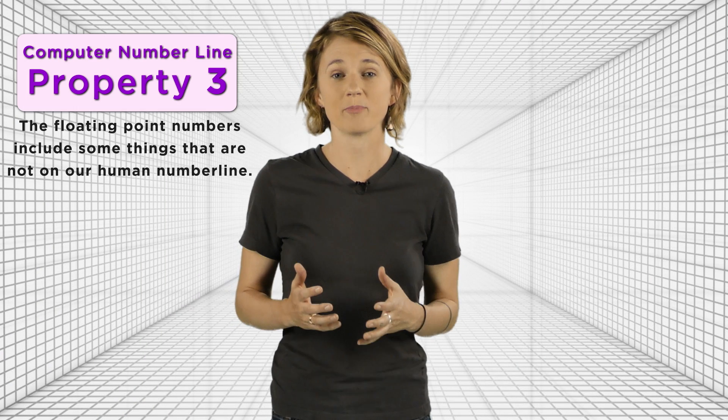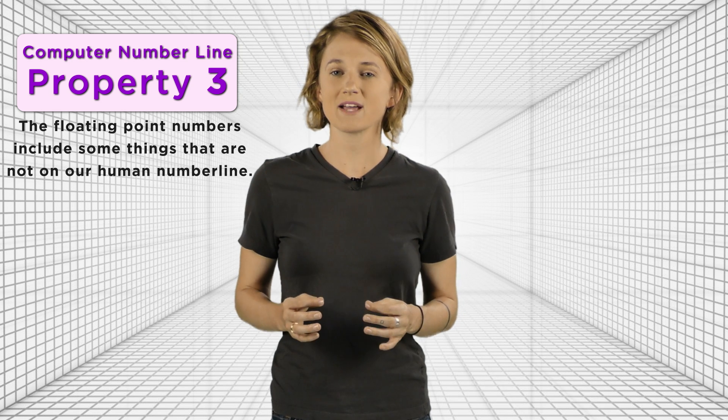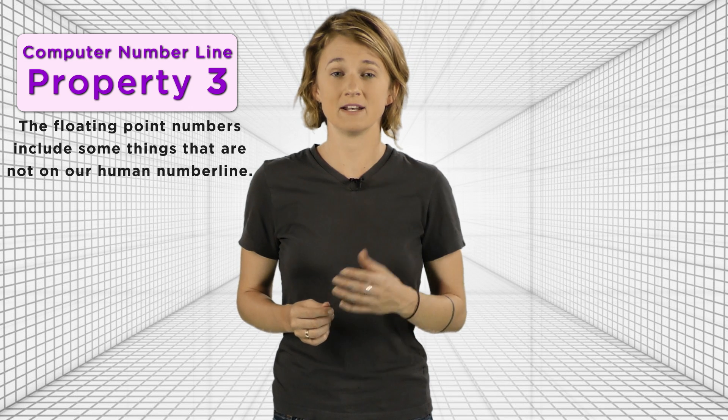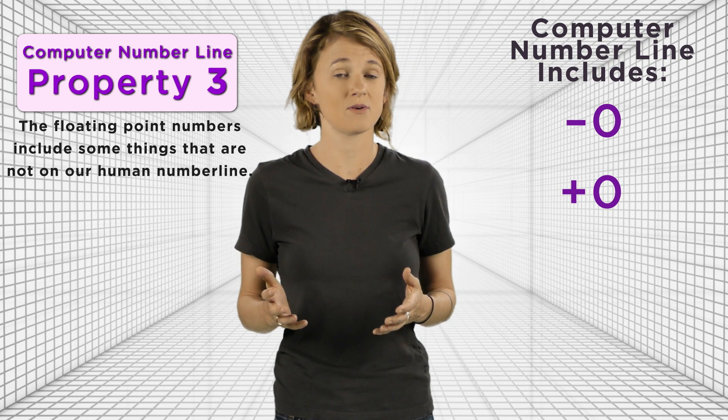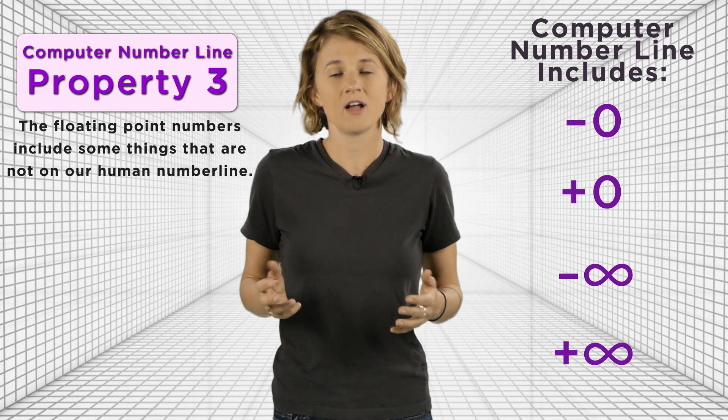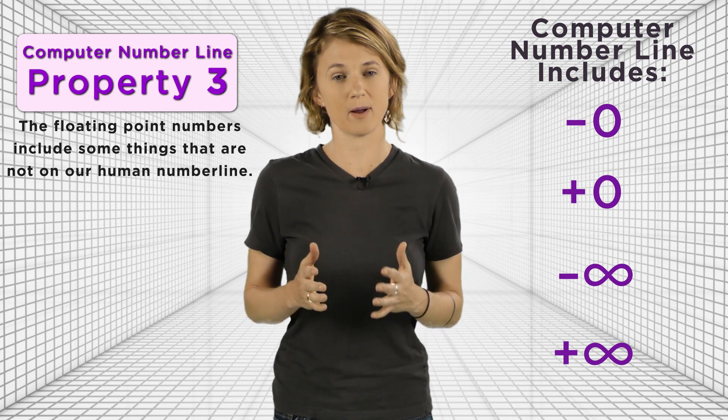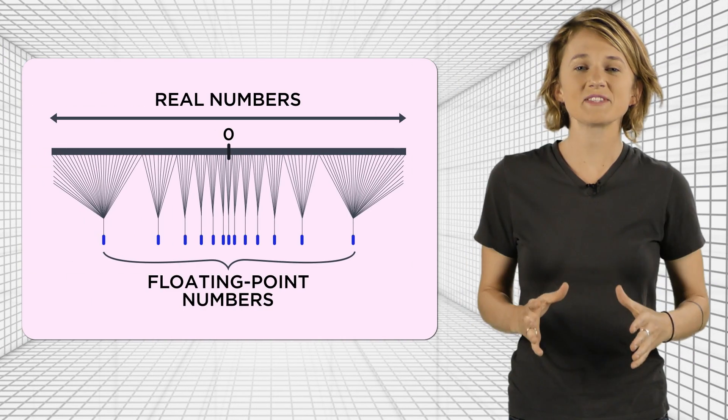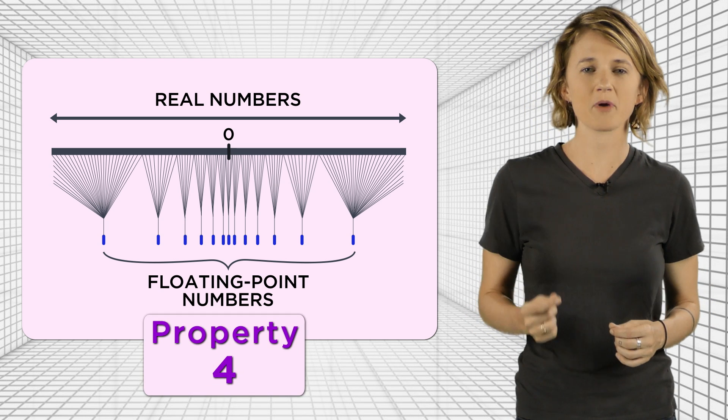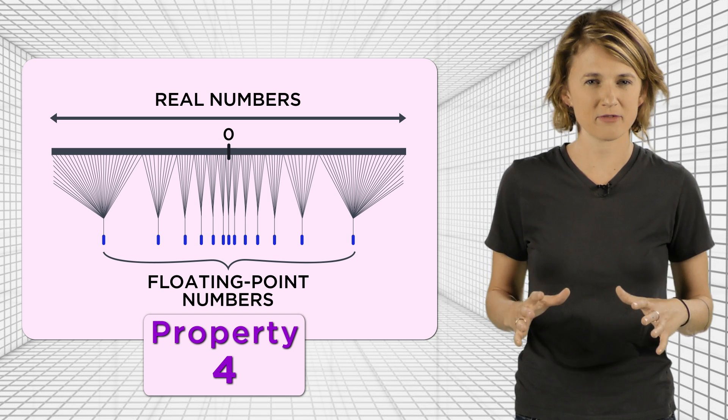And the third property is that the representable floating point numbers include some surprising things which are not on my human number line. It includes a negative 0 and a positive 0, as well as a negative infinity and a positive infinity, which is kind of weird. The floating point numbers aren't the numbers you intuitively think should be represented. This tells us a bit about the shape of the computer number line. And it begins to explain the fourth property, the oddities and errors of rounding floating point arithmetic.